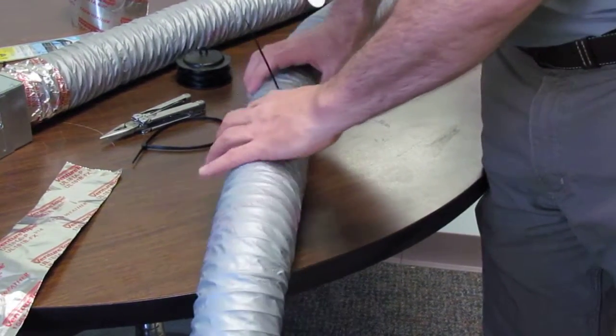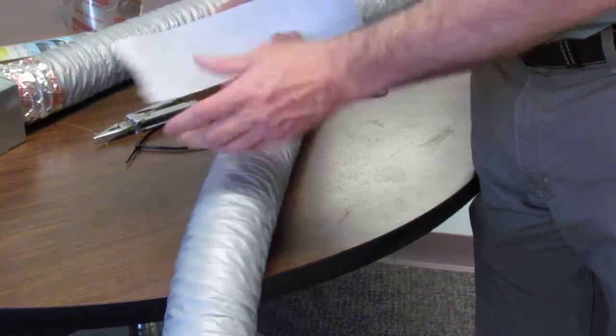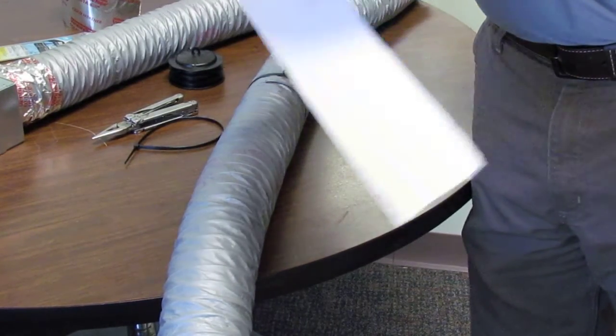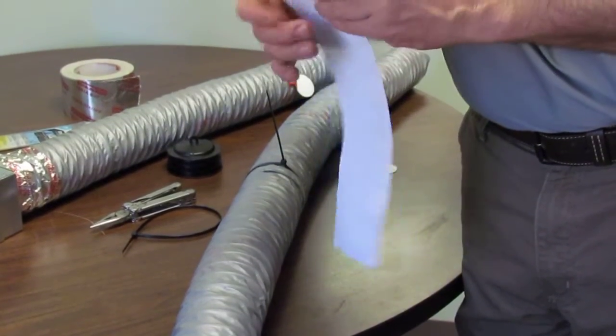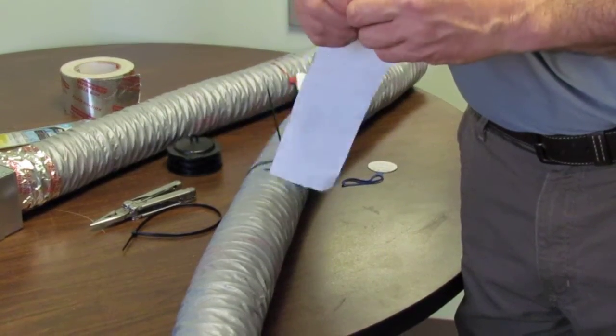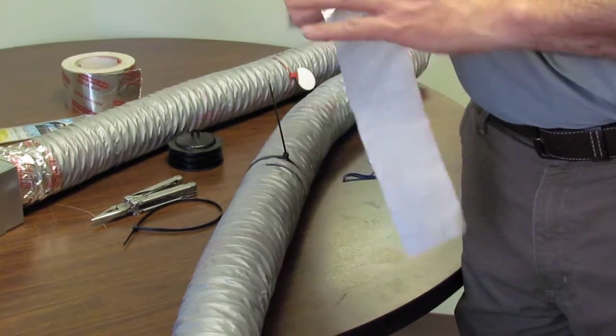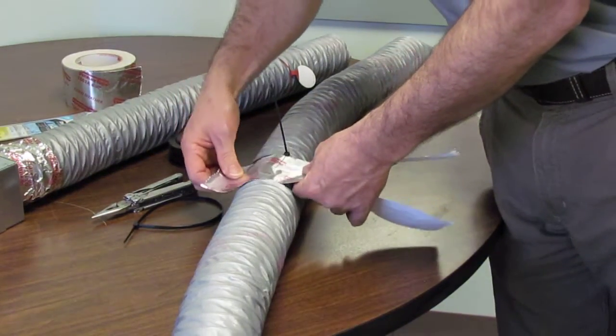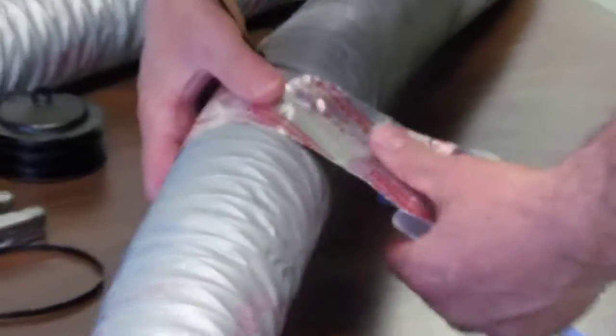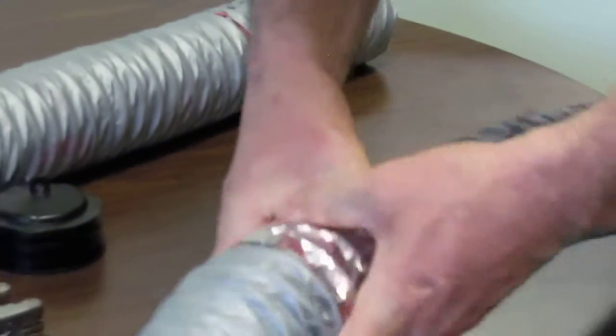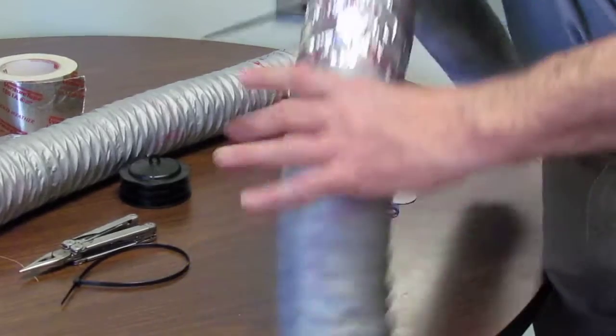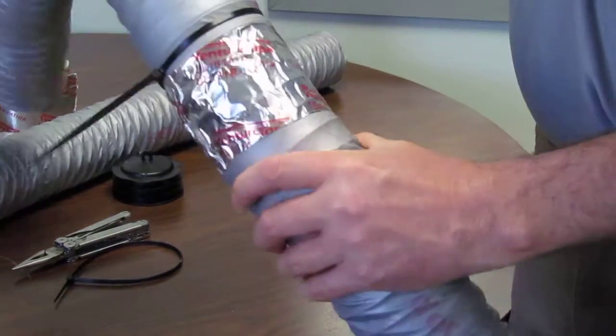Then we seal up the joint with the same tape. Once you get the tape started, right over the seam, wrap it right around, seal it down nice and tight. Now you have a very nice, very strong, airtight connection.